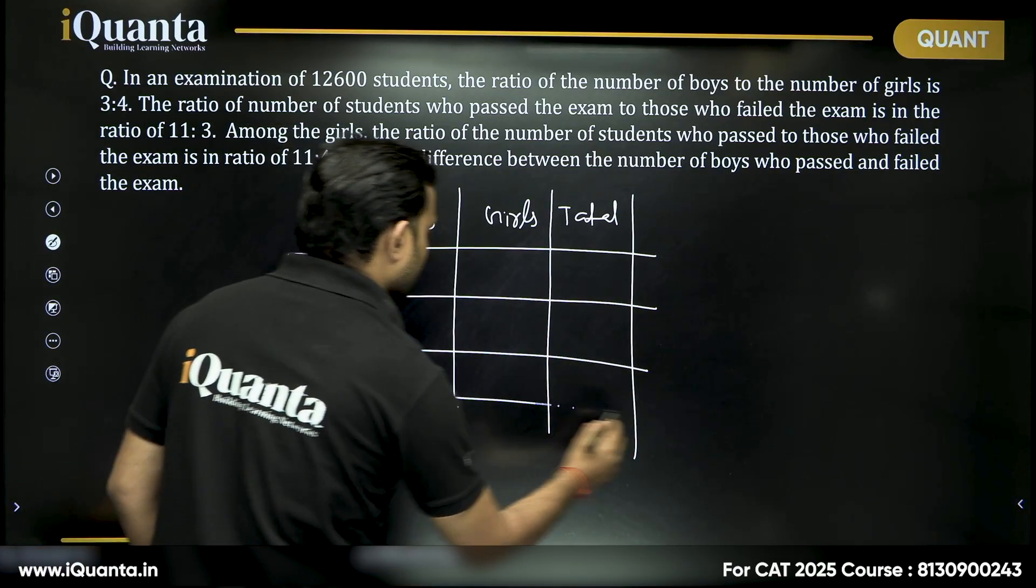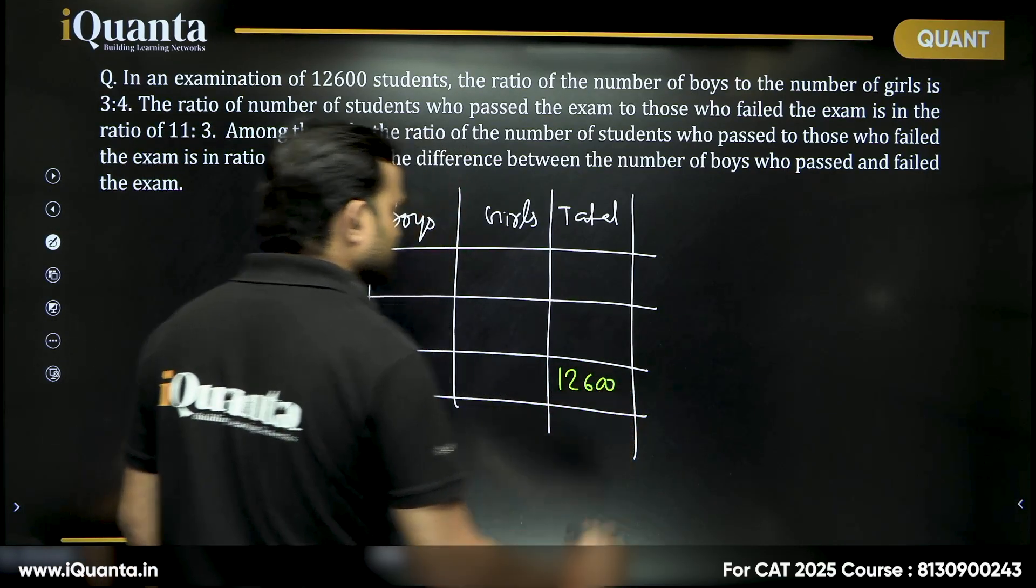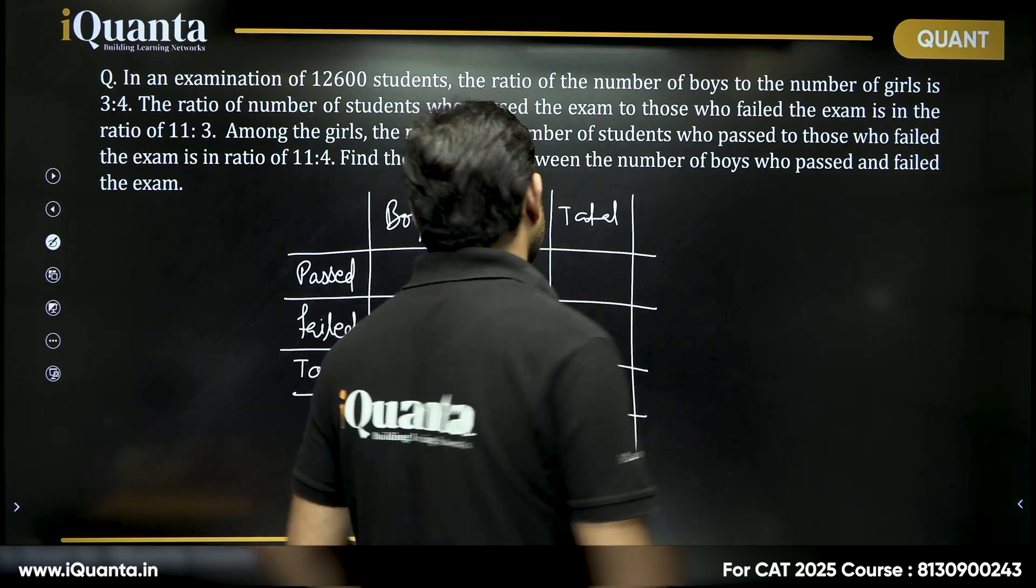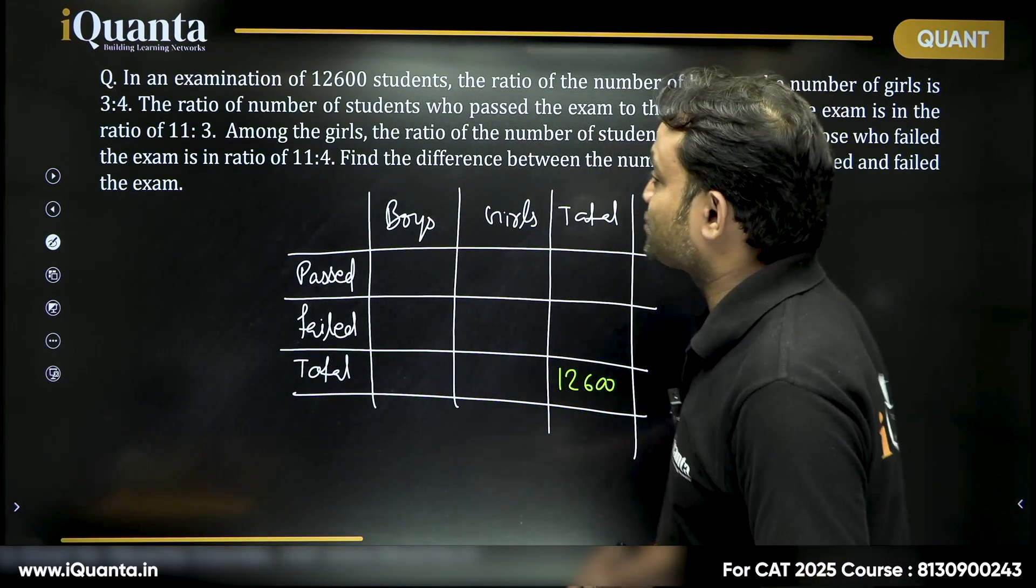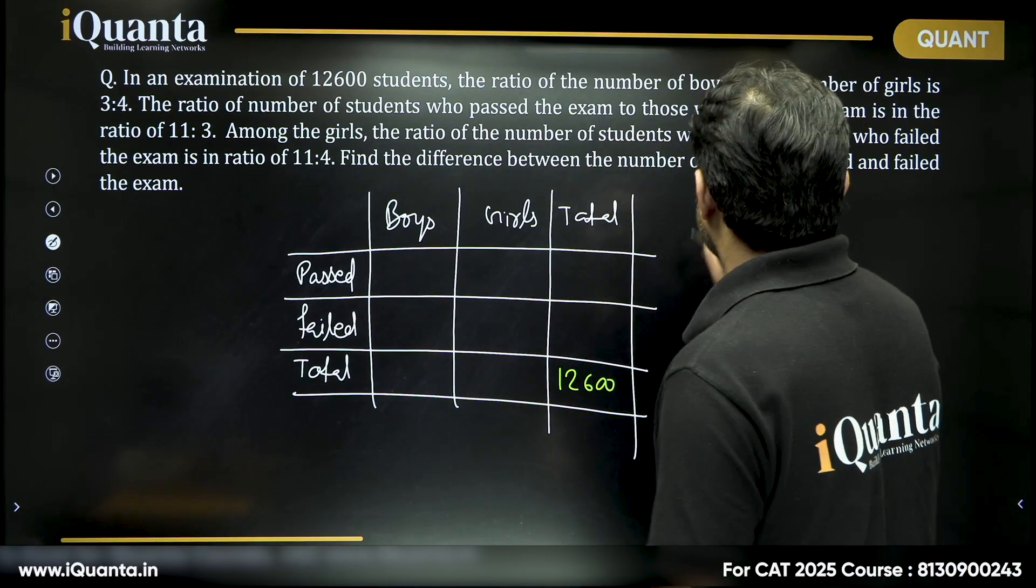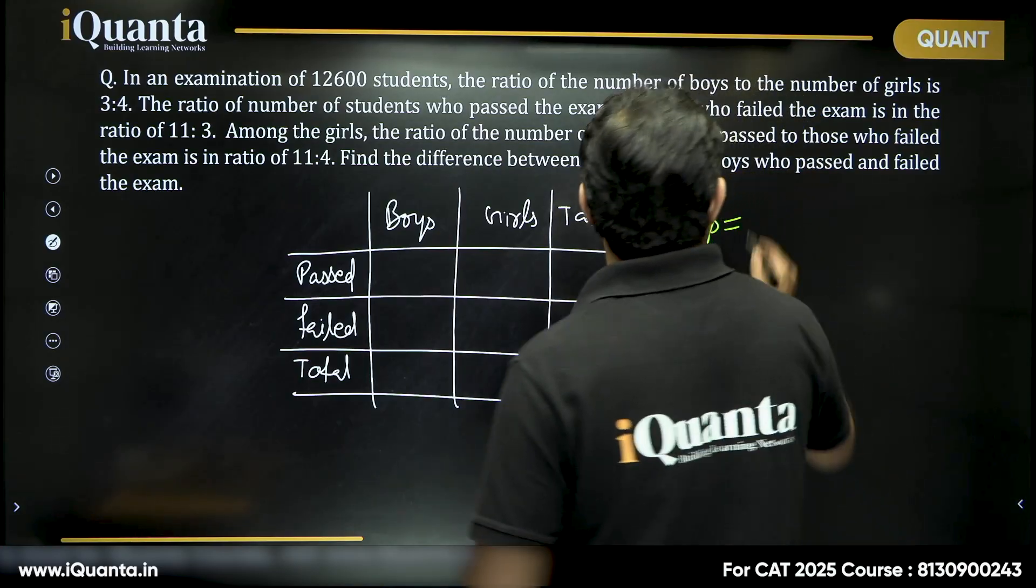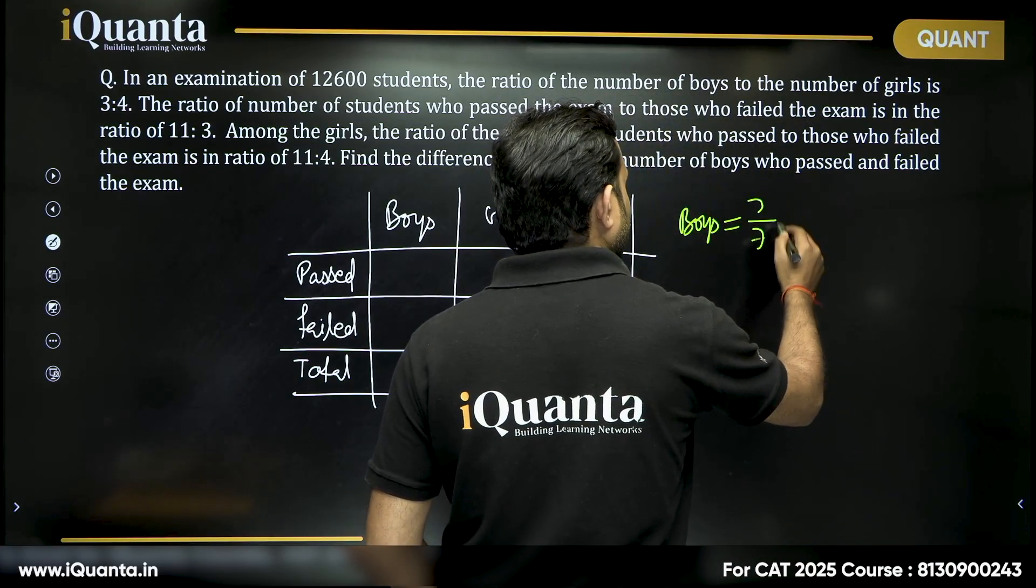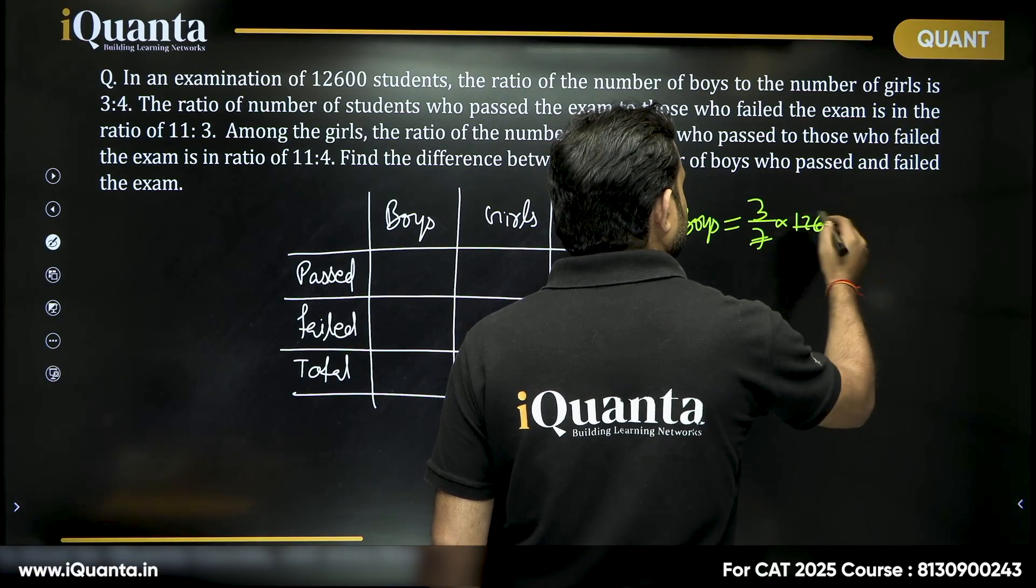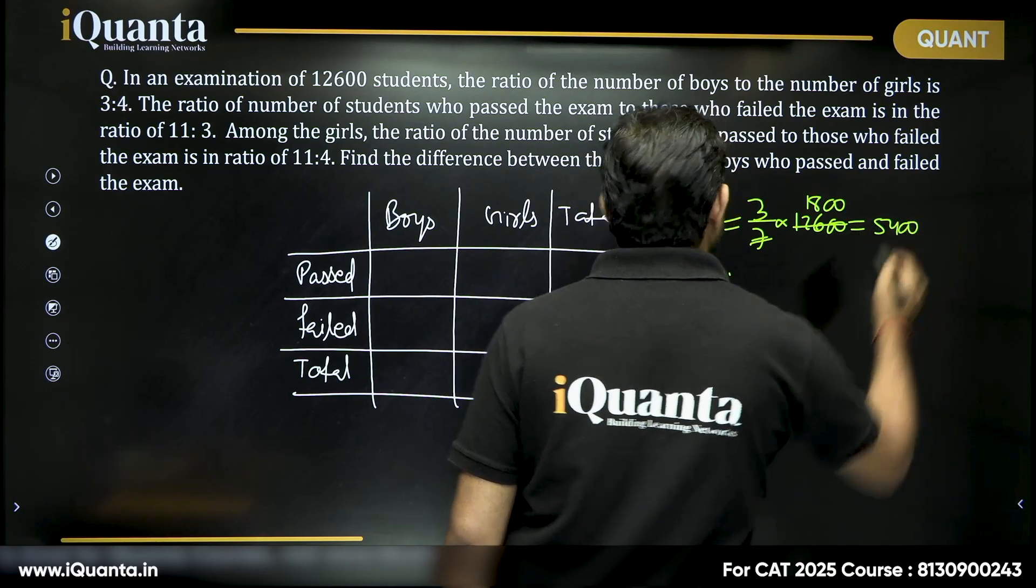Now what do we have? We have total of total. What is total of total? 12,600 of which boys is to girls 3 is to 4. Can I say if boys are 3x, girls will be 4x, total will be 7x and in that case number of boys will be 7x, this is 1,800 and this will be equal to 5,400.